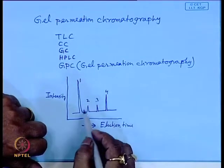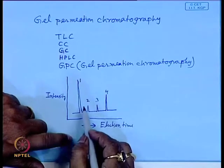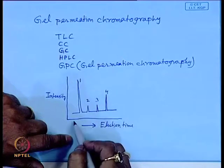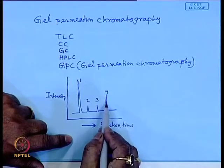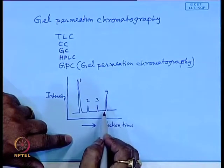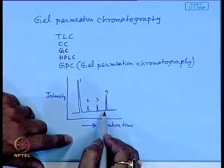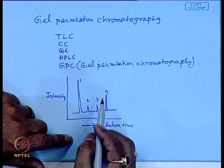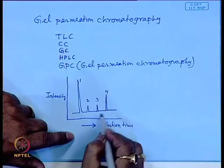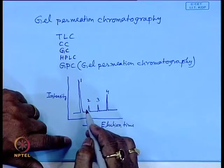The chromatogram shows separation but cannot tell you the identity of the components. To determine identity you must collect, isolate, and purify the fraction, then perform spectroscopic analysis such as IR or NMR. This concept has been extended to gel permeation chromatography.